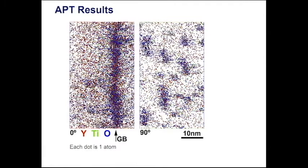In the zero-degree view, a local solute-enriched region can be seen, which can be interpreted as a grain boundary. The 90-degree view shows the position of each atom at the grain boundary region.